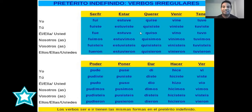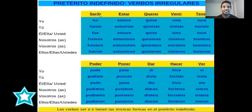Muy bien chicos. Ya tenemos los primeros cinco verbos conjugados en pretérito indefinido. We have the conjugation of the first irregular verbs in the past simple. Vamos a conjugar cinco más — let's go for another five. Well, actually here we have six — tenemos seis — porque ser e ir son iguales, but they are two different verbs.